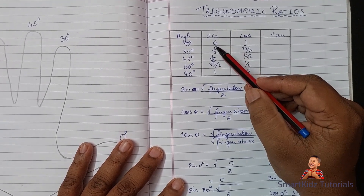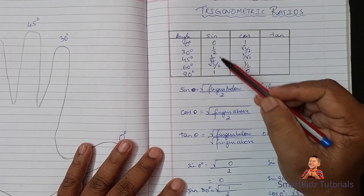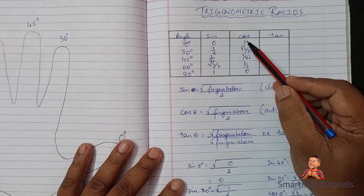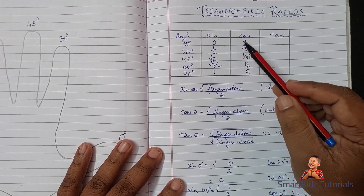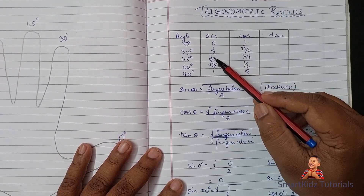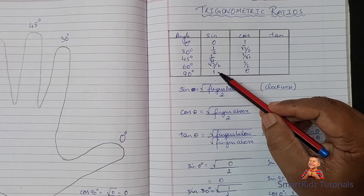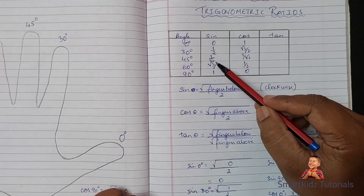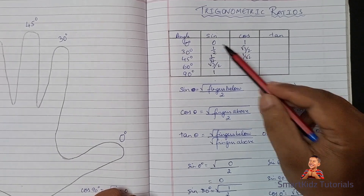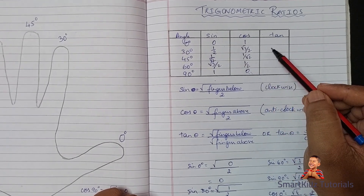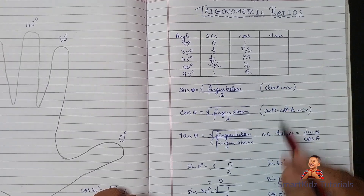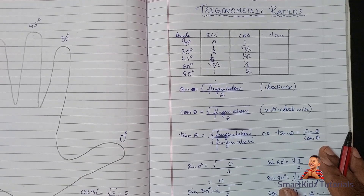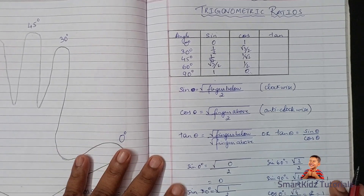Notice: for sine, starting from 0° to 90°, the values go from 0 up to 1. For cosine it starts from 1 and ends with 0 — just the opposite of sine. The sine values were 0, 1/2, 1/√2, √3/2, 1 and the cosine values are the reverse: 1, √3/2, 1/√2, 1/2, 0. Now tan becomes very easy — you can use sine upon cos, or square root of fingers below upon square root of fingers above.